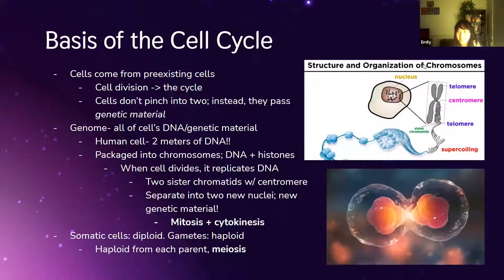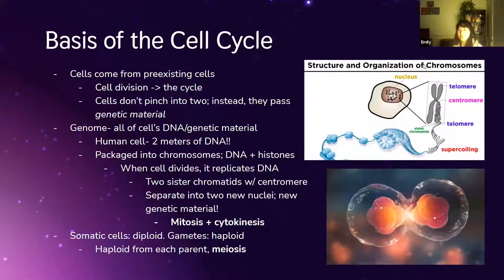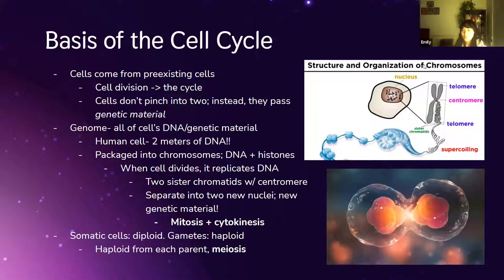DNA and genetic material is packaged into chromosomes, which are a combination of DNA and proteins called histones. Histones basically help chromosomes maintain their X-like structure. Each chromosome is made out of two sister chromatids, and all along the chromosome there are genes — if you magnify it, you can see the DNA.